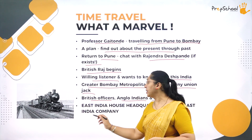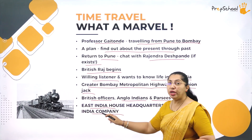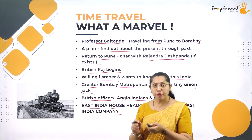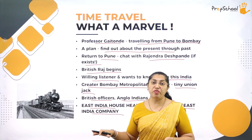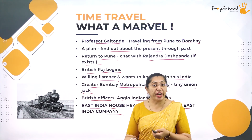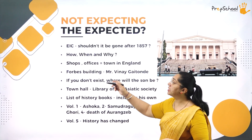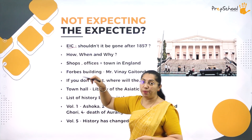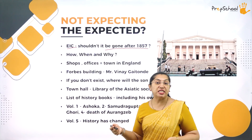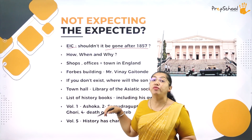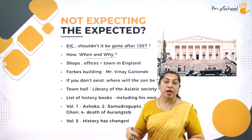He also read about the East India Company and its headquarters. There was a pause — because as per the British rule, after independence they were supposed to move away from India. But they were still there. A treaty existed between the British rule and the Indian government. The East India Company should have left India after 1857, but they were still present. He wonders how and why they had not moved out of India.